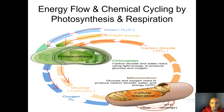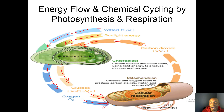The mitochondria takes in glucose and oxygen to produce carbon dioxide, water, and energy in the form of ATP. In cellular respiration, the mitochondria uses glucose and oxygen to produce carbon dioxide, water, and ATP energy for other organisms to survive. The byproduct of cellular respiration is carbon dioxide.